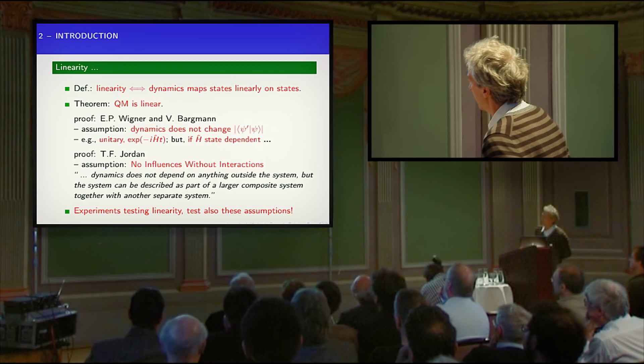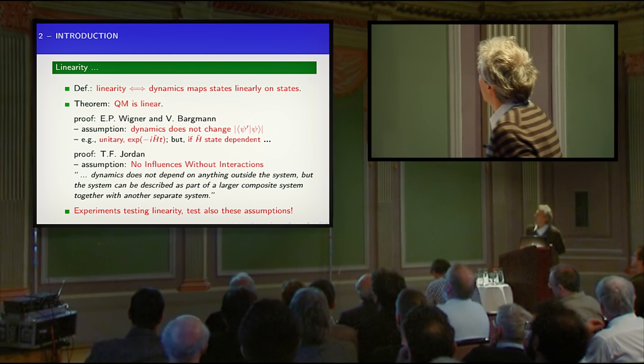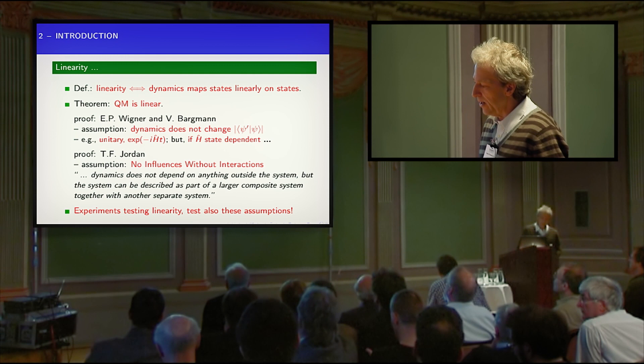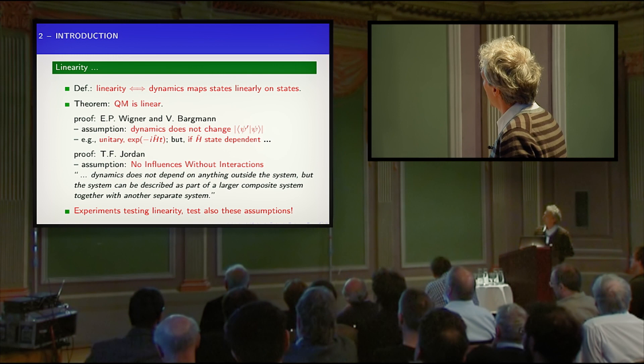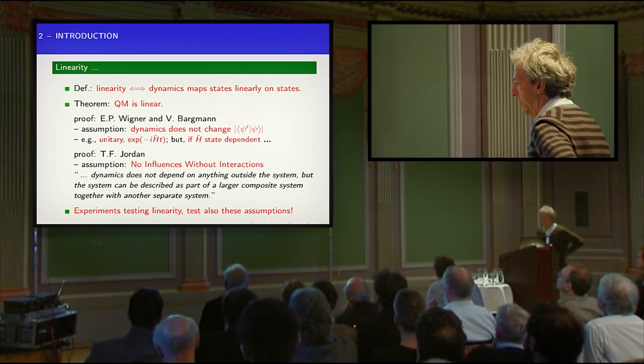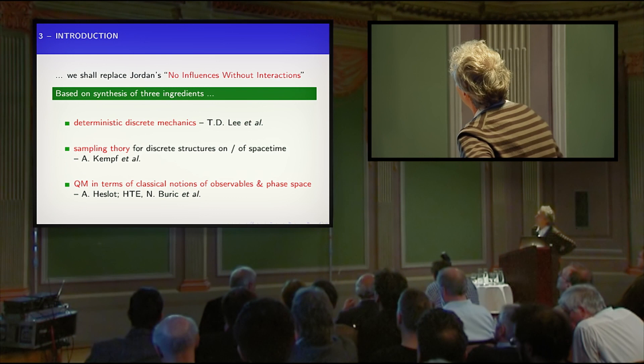More recently, from within quantum mechanics, you can actually prove under a much wider assumption that quantum mechanics has to be linear, and I've summarized it here as saying 'no influences without interactions.' This includes also the idea that any hidden variable theory should not lead to superluminal signaling. Experiments which test for the linearity of quantum mechanics basically test, as Jordan explains very well in some recent papers, this kind of assumption.